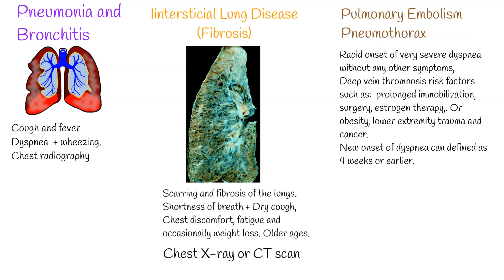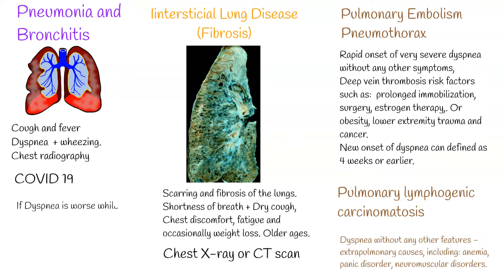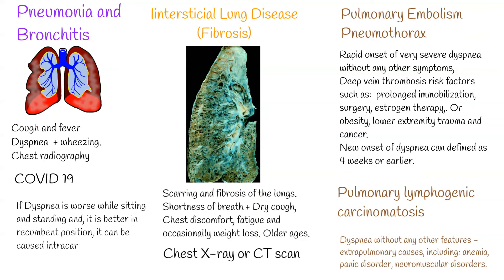Pulmonary lymphogenic carcinomatosis can be considered when a patient has malignancy, especially breast, lung, and gastric cancer. If a patient reports prominent dyspnea without any other features, it can be due to extra-pulmonary causes including anemia, panic disorder, and neuromuscular disorders. COVID-19 can also cause dyspnea; after 10 to 14 days, muscle weakness and dyspnea can be prominent. If dyspnea is worse while sitting and standing but better in the recumbent position, it can be caused by an intracardiac shunt or pulmonary vascular shunt.